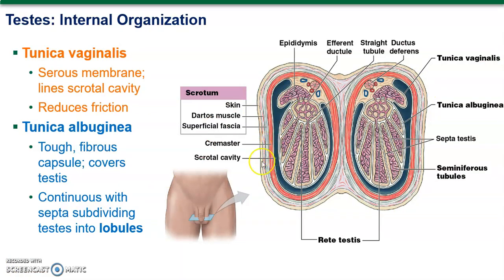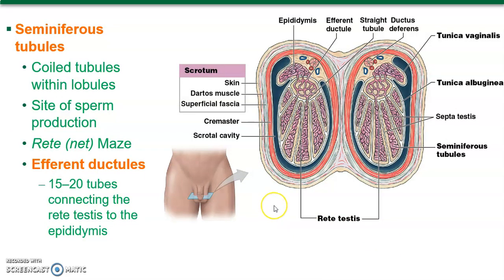The testes have a serous membrane around them to reduce friction and keep them safe. What you're seeing now are the seminiferous tubules — this is where actual sperm will be made. Stem cells in here pop out sperm constantly, because millions of sperm are being made all the time. The rete testis refers to a net or maze the sperm travel through, jumping up into the epididymis and then traveling out to the ductus deferens.